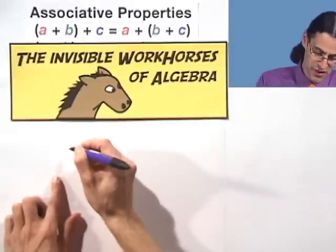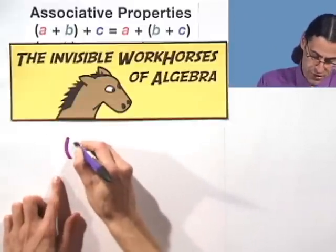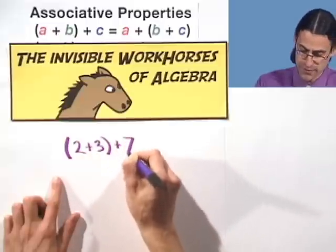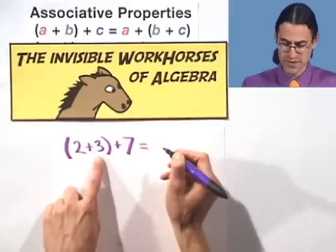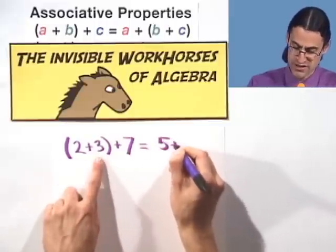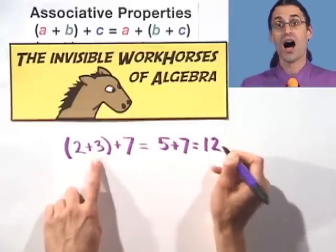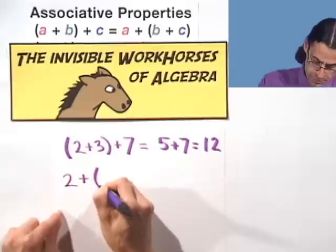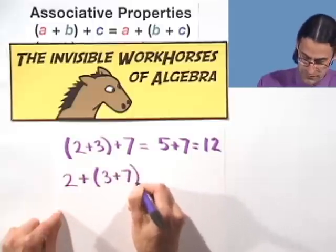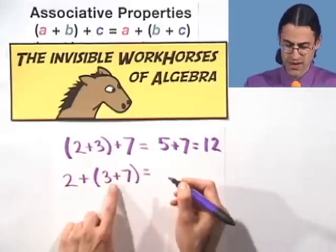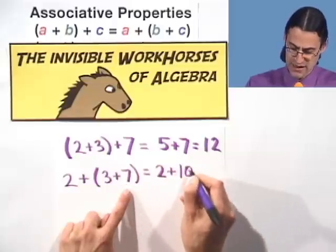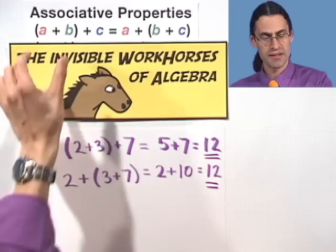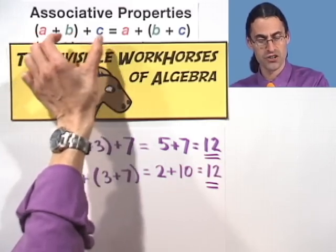Let me just illustrate this with an example. Suppose that I have 2 plus 3 plus 7. Notice that this way, I first do the parentheses and I get 5 plus 7 and that equals 12. On the other hand, if I were to group the other way, 2 plus the quantity 3 plus 7, then first I have to actually do that addition and get 10 and then combine with the 2. But notice I get the same answer, 12. So it doesn't make a difference which pair you add first.